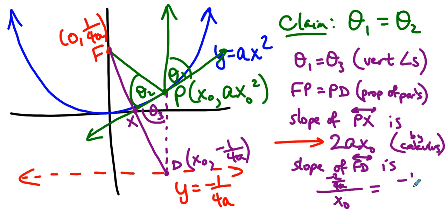So this is negative 1 over 2AX naught. And then we pause to consider that this number and this number multiply to negative 1. And because this number and this number multiply to negative 1, PX and FD are perpendicular.